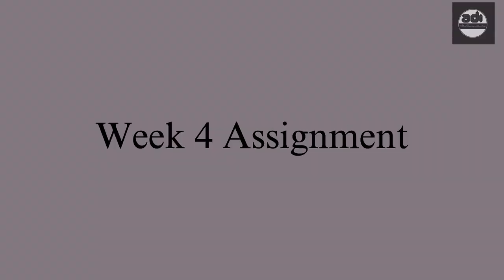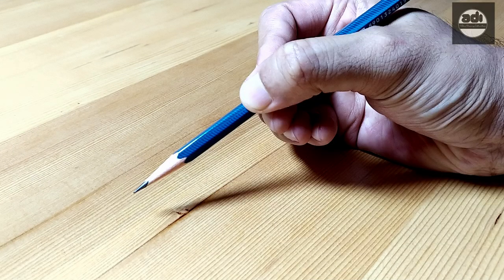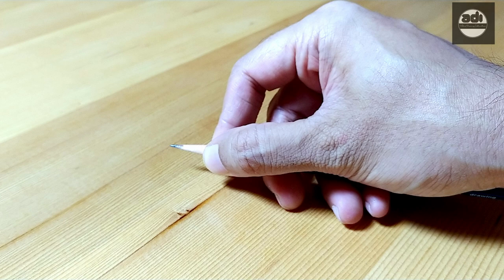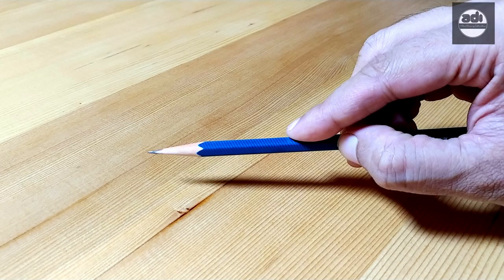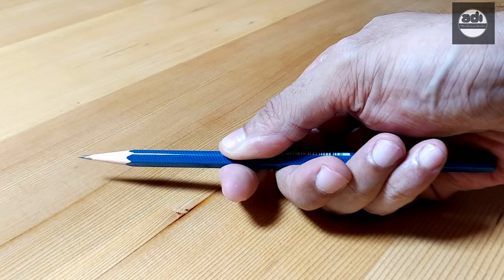For your assignment this week, you will try to draw holding the pencil close to the point and away from the point. Hold the pencil the normal or usual way you do, that is in terms of grip. The only change is that you will hold it close to the point and away from the point. Draw something using these variations in grip and experience how the pencil feels and the marks it makes.